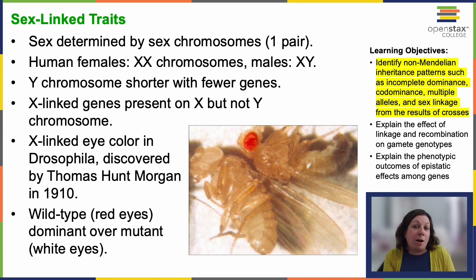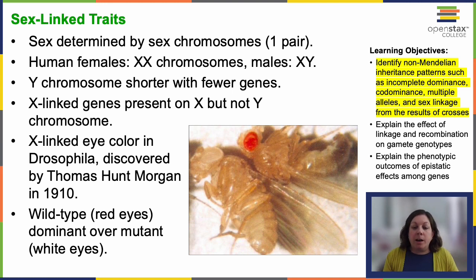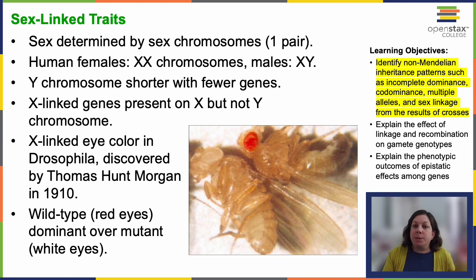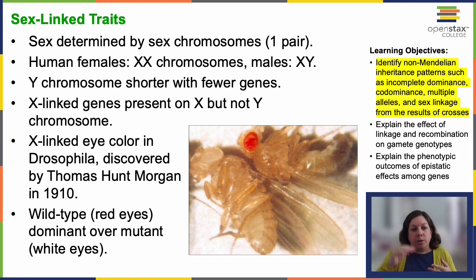Although the Y chromosome contains a small region of similarity to the X chromosome that allows them to pair during meiosis, the Y chromosome is much shorter and contains many fewer genes — it was probably a piece that broke off an X chromosome millions of years ago. When a gene being examined is present on the X chromosome but not the Y chromosome, we call that X-linked. Eye color in Drosophila, the fruit fly, was the first X-linked trait identified — by Thomas Hunt Morgan, who mapped it to the X chromosome in 1910.